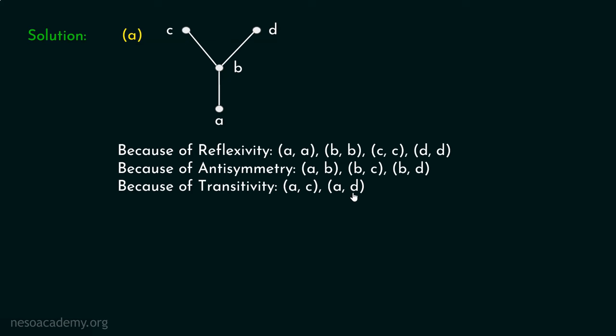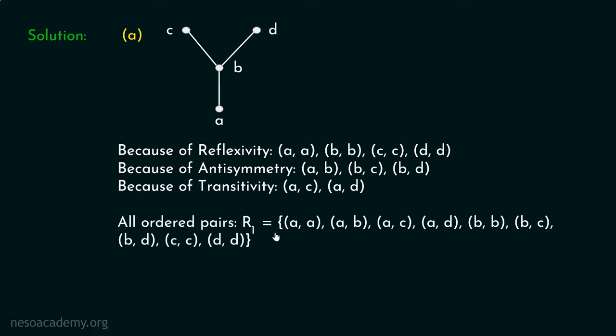Because of transitivity, (A,C) and (A,D) must also belong to the partial order. Since A and B are related and B and C are related, A and C are related. Also, since A and B are related and B and D are related, A and D are related. So the complete relation R1 consists of: (A,A), (A,B), (A,C), (A,D), (B,B), (B,C), (B,D), (C,C), (D,D).